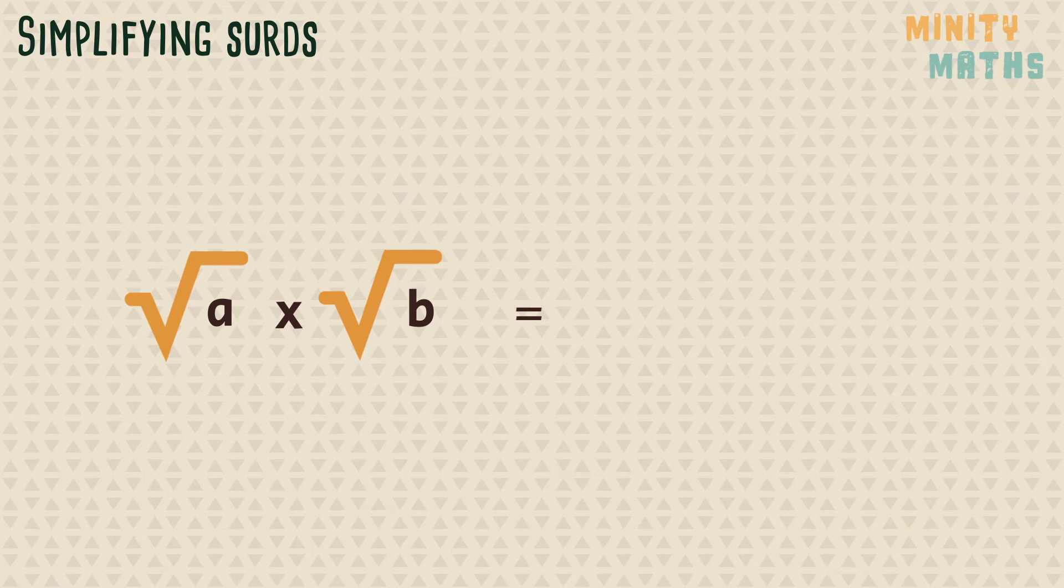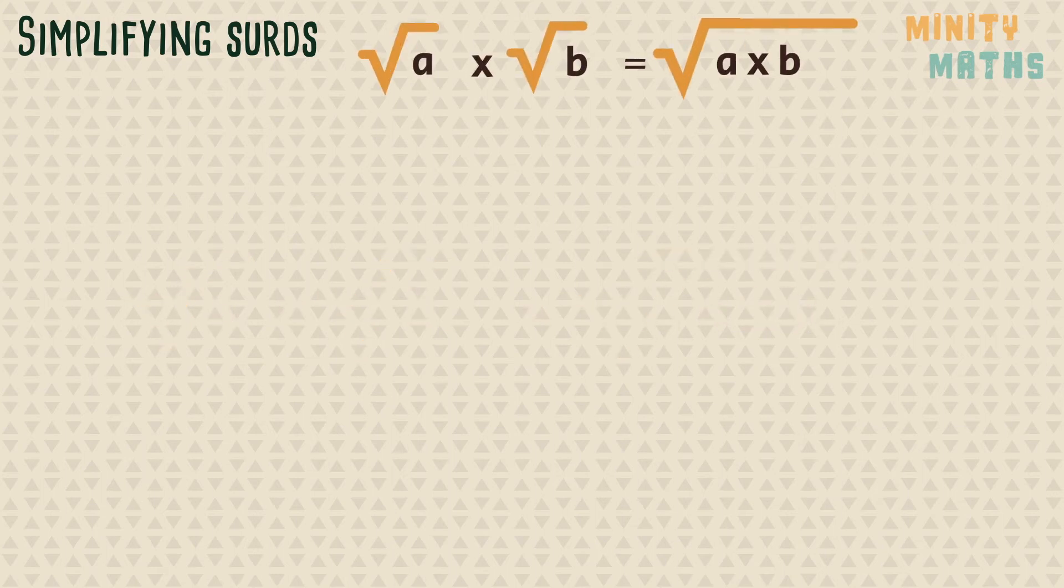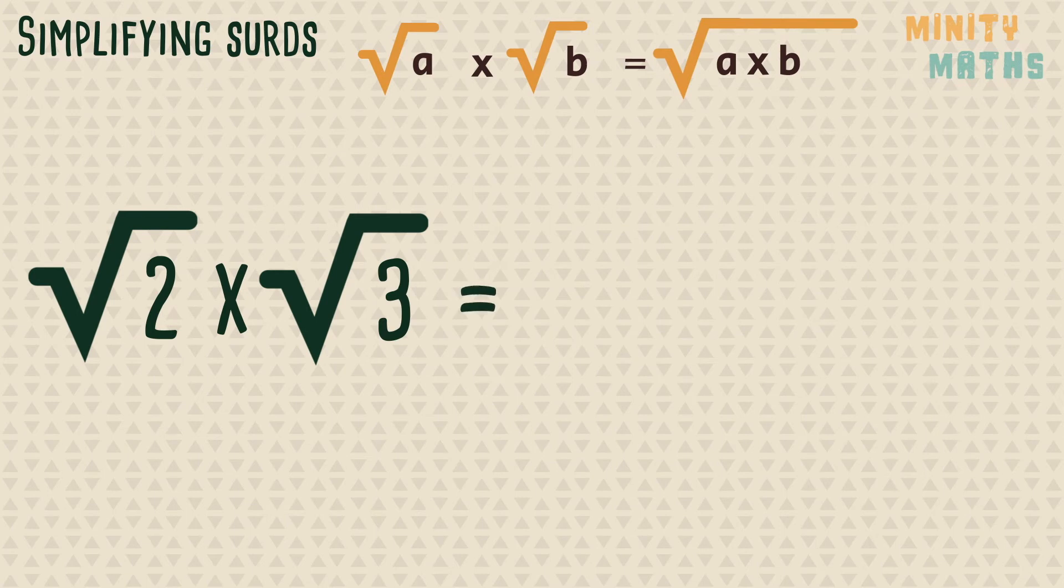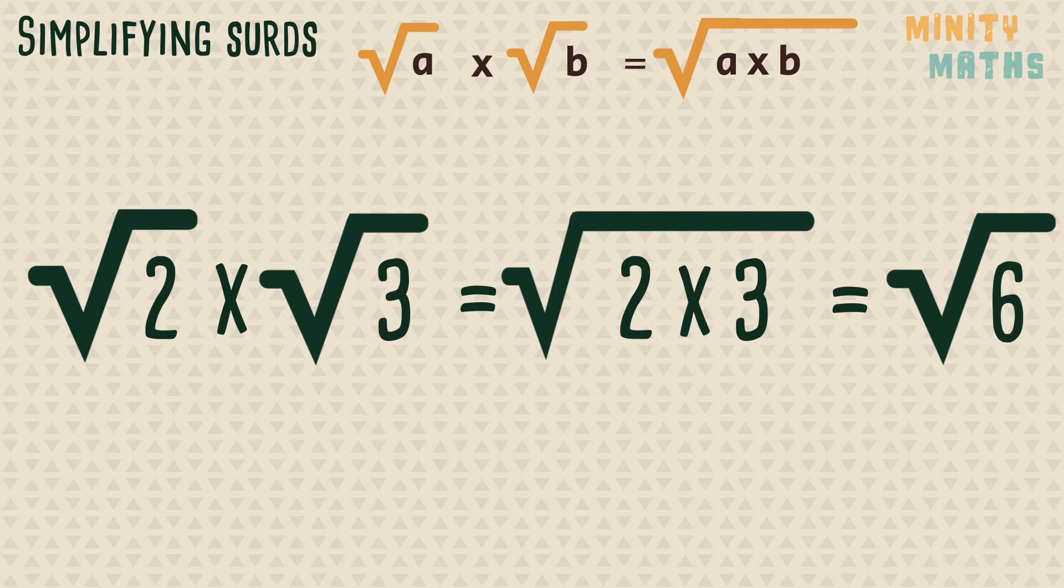Another rule we can use to simplify surds is the reverse of the last one and involves multiplying two surds together. Let's look at an example. So by following the above rule, we can multiply the 2 and the 3 together. The answer cannot be simplified any further as 6 does not have any perfect squares as its factors.